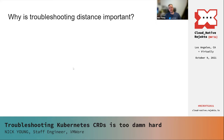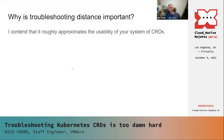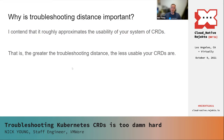Why is this troubleshooting distance idea important? I think it roughly approximates the usability of your set of CRDs. The greater the troubleshooting distance, the worse or less usable your CRDs are. The more kubectl commands you need to do, the more it shows that you've got steps to jump through to get to understanding where your problem is. The more you can bring information in and keep that troubleshooting distance lower, the tighter and more easy-to-understand your model is as well.